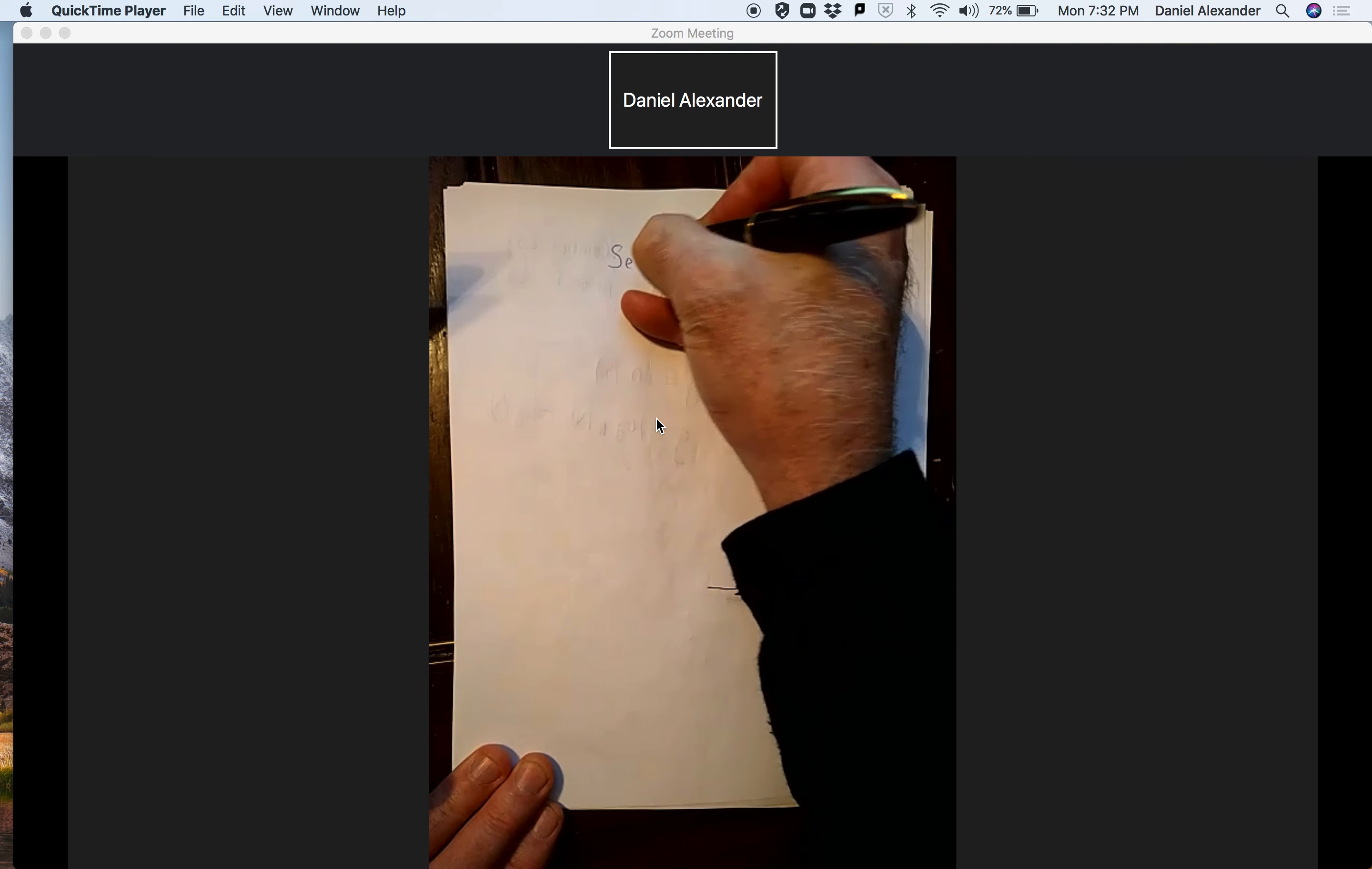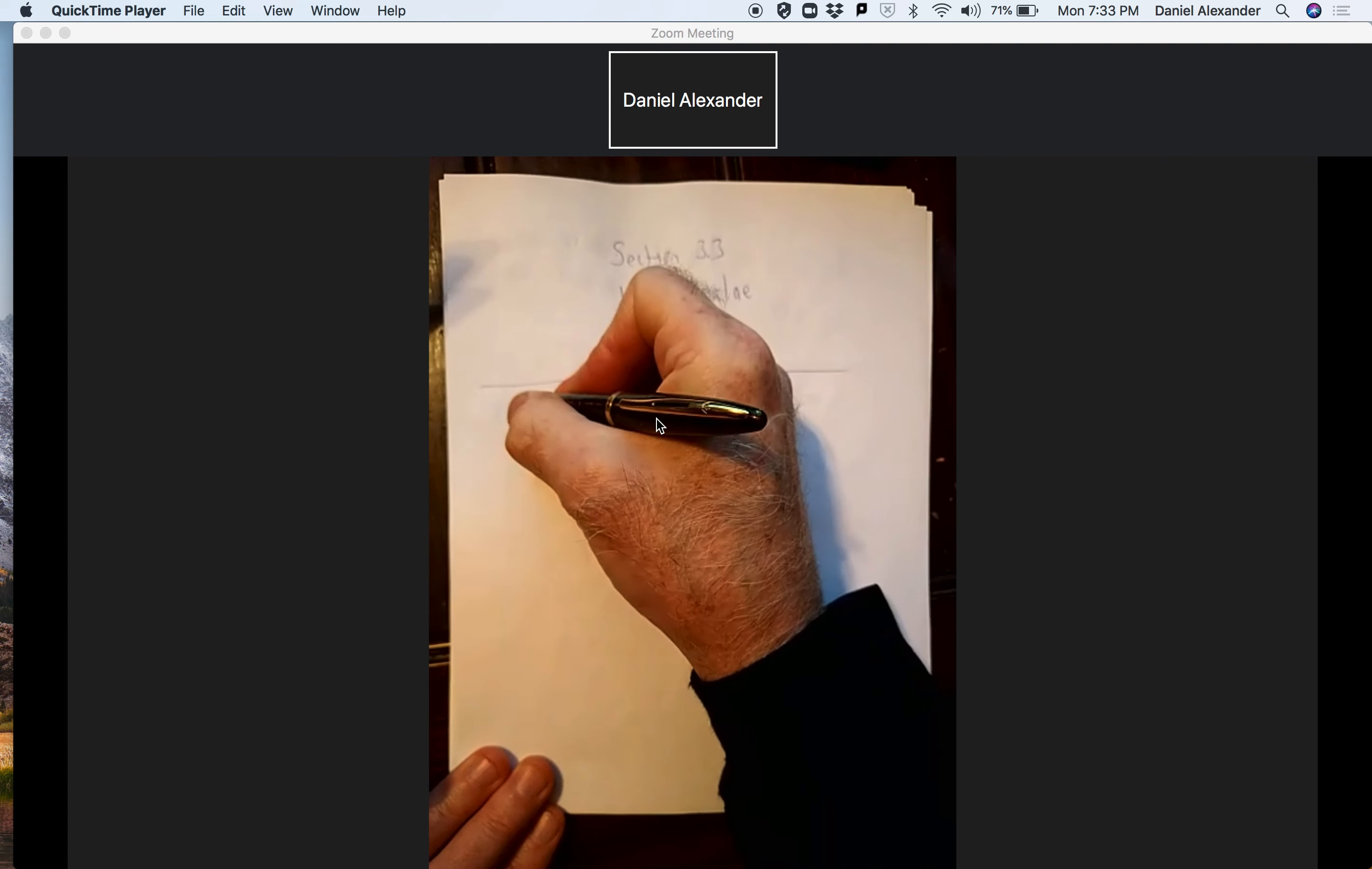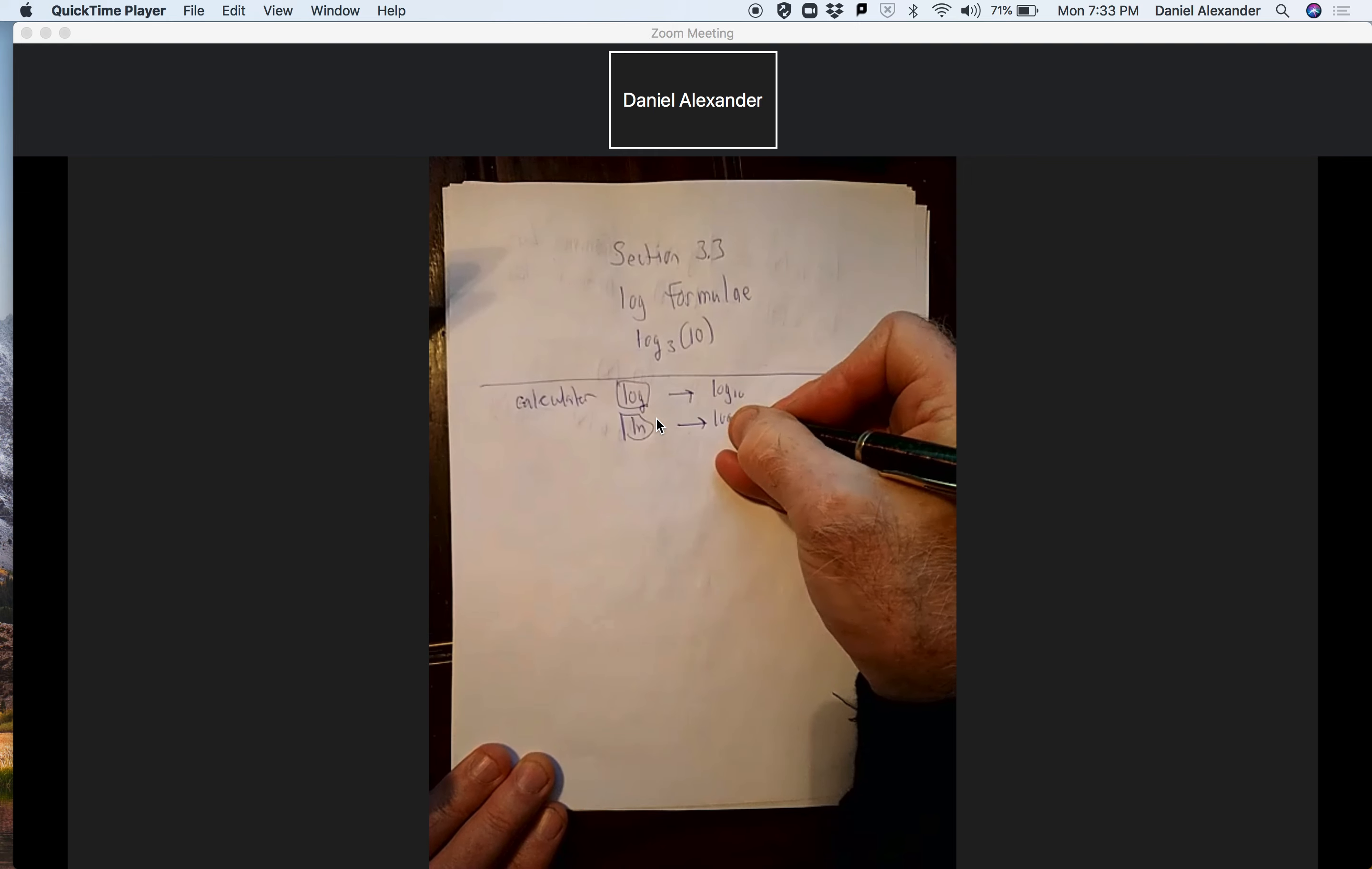This video is going to be about section 3.3 and it's about a bunch of log formulas, and it's also going to tell us how to evaluate something like this. If you think about this, and this is where I'm going to start, our calculators have a log button and a natural log. That log button is really the log base 10 of whatever you enter. The natural log is the log base e.